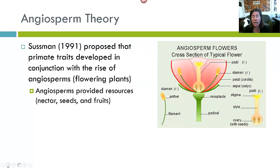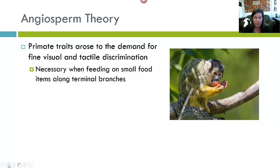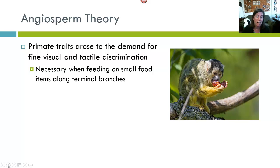The third hypothesis is known as the angiosperm theory, proposed by Robert Sussman in 1991. He proposed that basic primate traits developed in conjunction with the rise of angiosperms — flowering plants. Flowering plants provide numerous resources such as nectar, seeds, and fruit. Sussman argues that primate traits arose in response to the demand for fine visual and tactile discrimination — primates needed adept hands and visual capabilities to distinguish when fruit was ripe and whether a flower had opened, and it was necessary for feeding on small food items along terminal branches. So primates evolved in conjunction with angiosperms. These are the three primary hypotheses that account for the origin of primates.